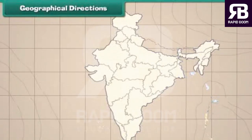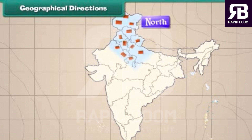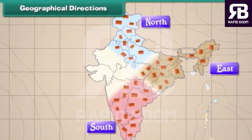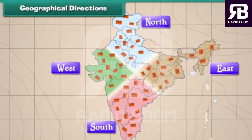Geographical directions. People live at different places in India. Some places are in the north while some others are in the south. Some places are located on the east and some others are on the west.